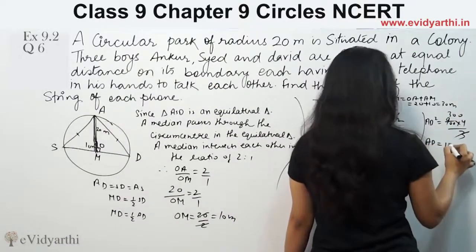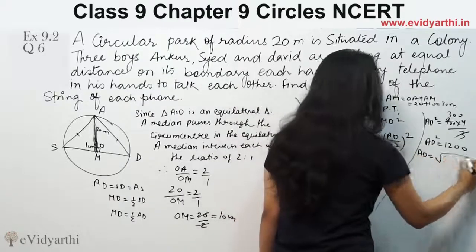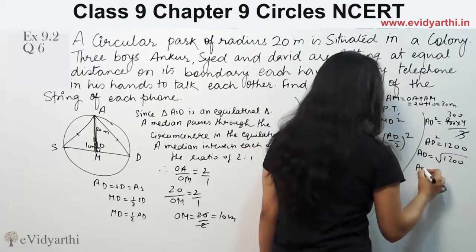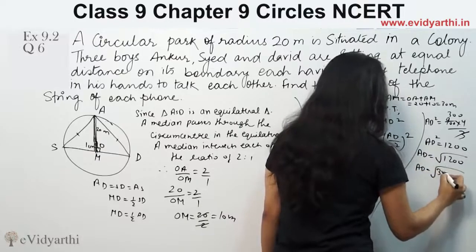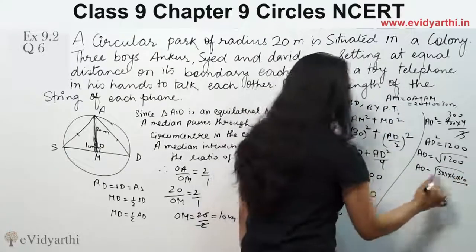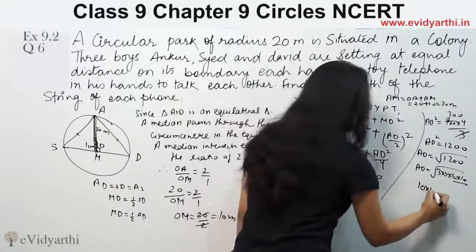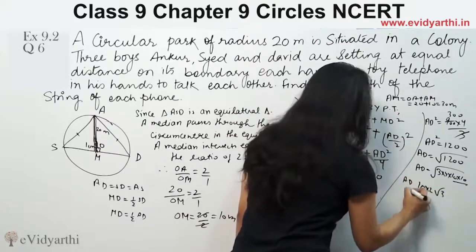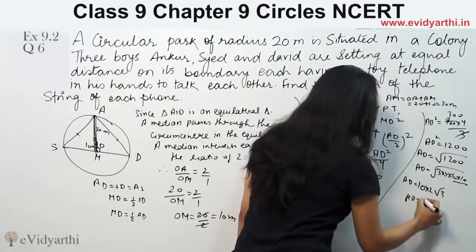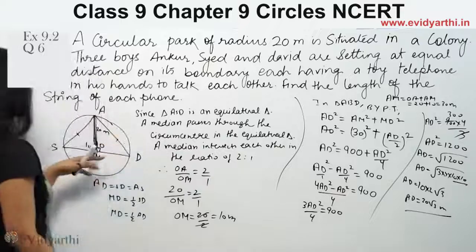So AD equals 1200 - the square will go up and become square root. So solving under the root: 3 stays, and 100 can be taken as 10 into 10. So from the pair, one 10 will come out. And 4's root is 2. Under the root stays 3. So AD's length we have is 20 root 3 meters. This is AD: 20 root 3 meters.